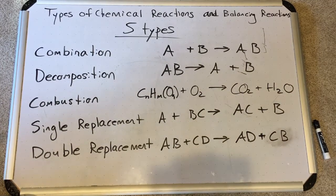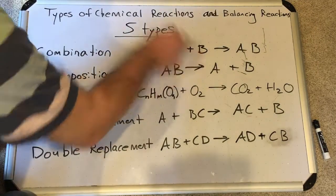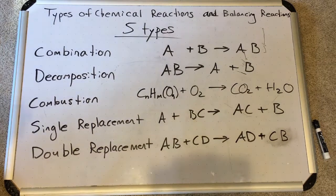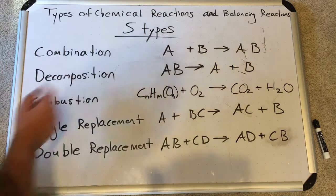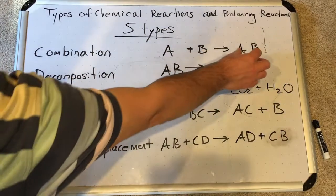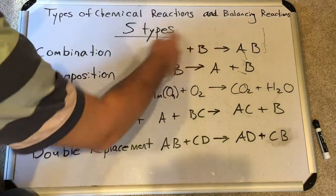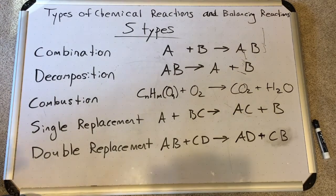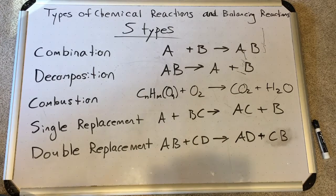Here are the five types: combination, decomposition, combustion, single replacement, and double replacement. We'll look at those in that order. First, a combination reaction — we know we have a combination reaction when two elements are combined to make a compound. You could also have compounds combining, but the basic idea is more than one object on the reactant side yields one compound on the product side.